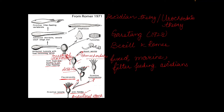This is the ancestral tunicate with a free-swimming tailed larva. The larva was free-swimming in order to feed on planktons on the surface water, and also for dispersal — to move from one place to another — because the adult was sessile and fixed. This larva would then attach itself to a suitable substrate.